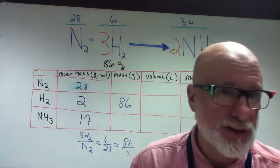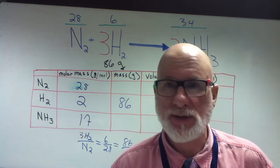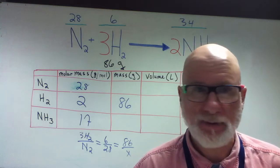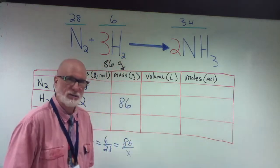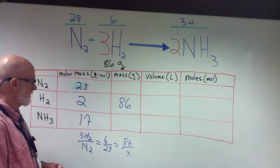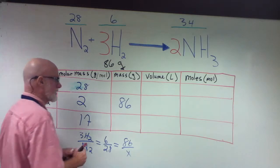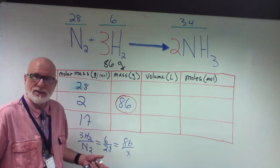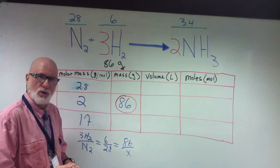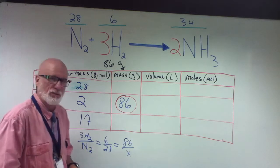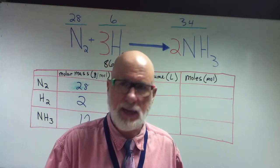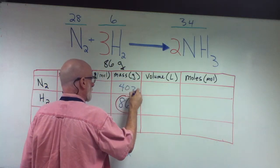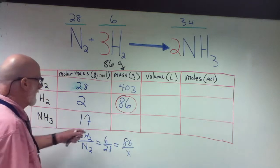Can you guys get out your calculators so we can do this in less than two days? You have enough calculating ability to go to the moon, or Jupiter even. So what's the answer? 86 times 28 divided by 6. 401? All right — 401.3. Is it okay if we just round to ones place wherever we can? So 403.